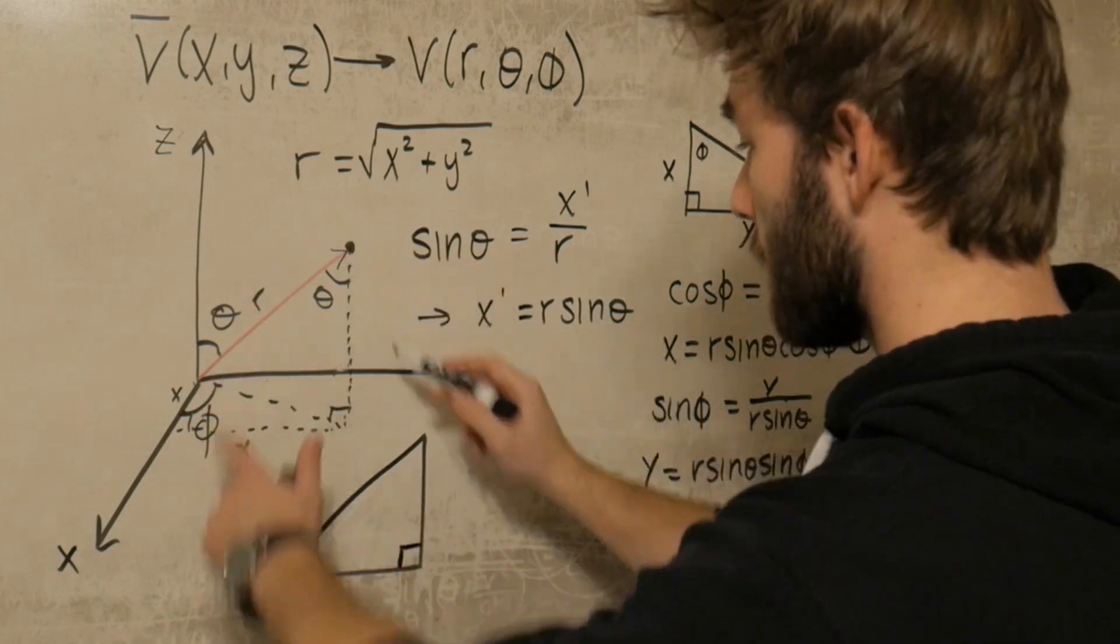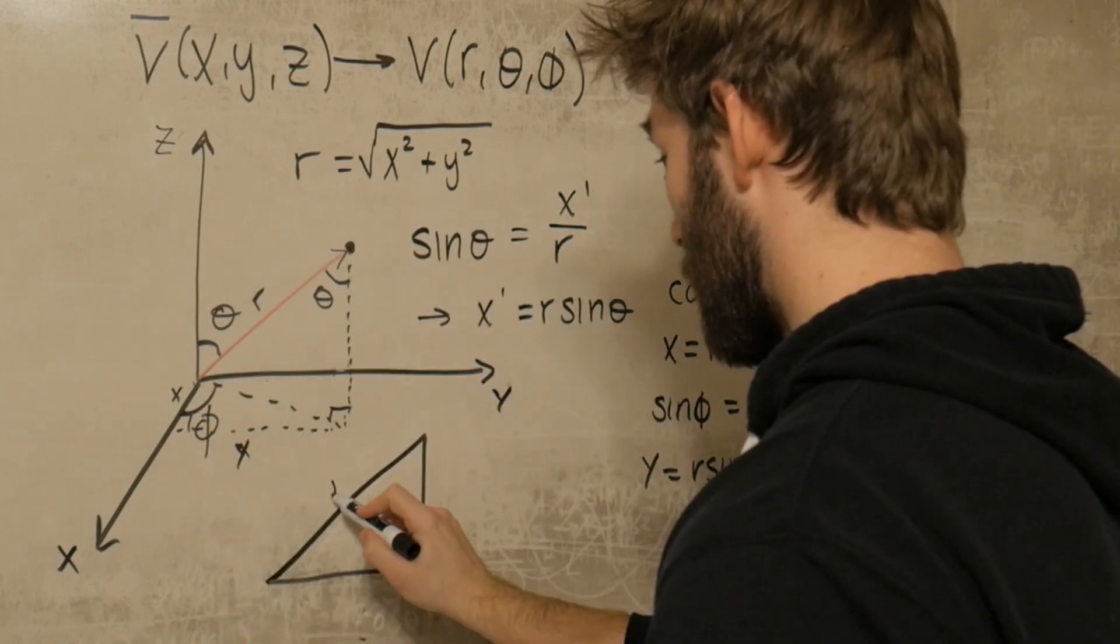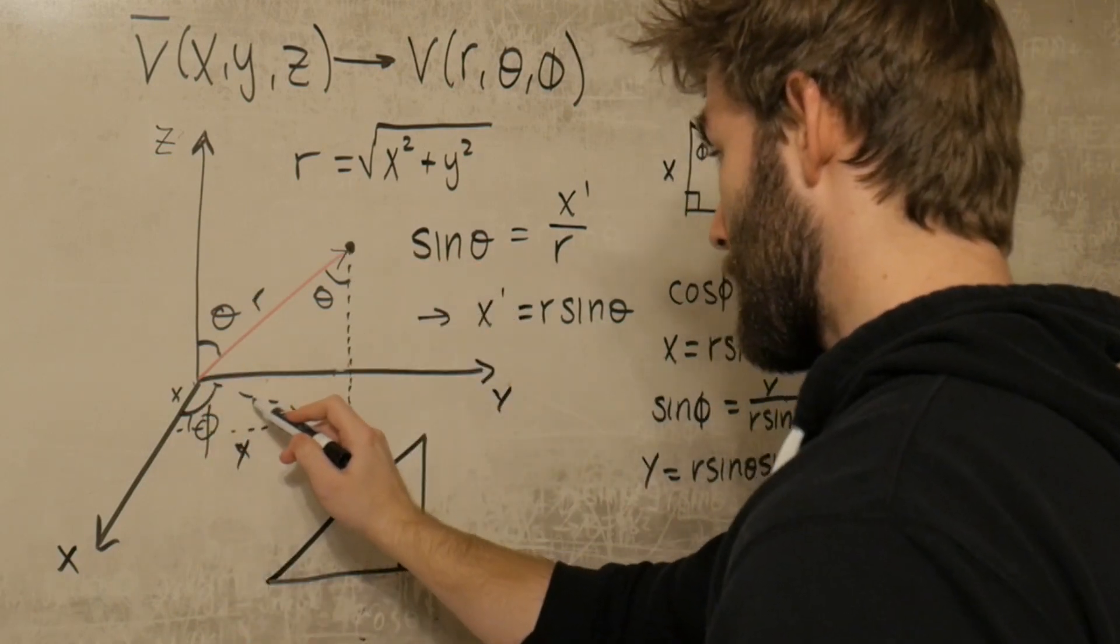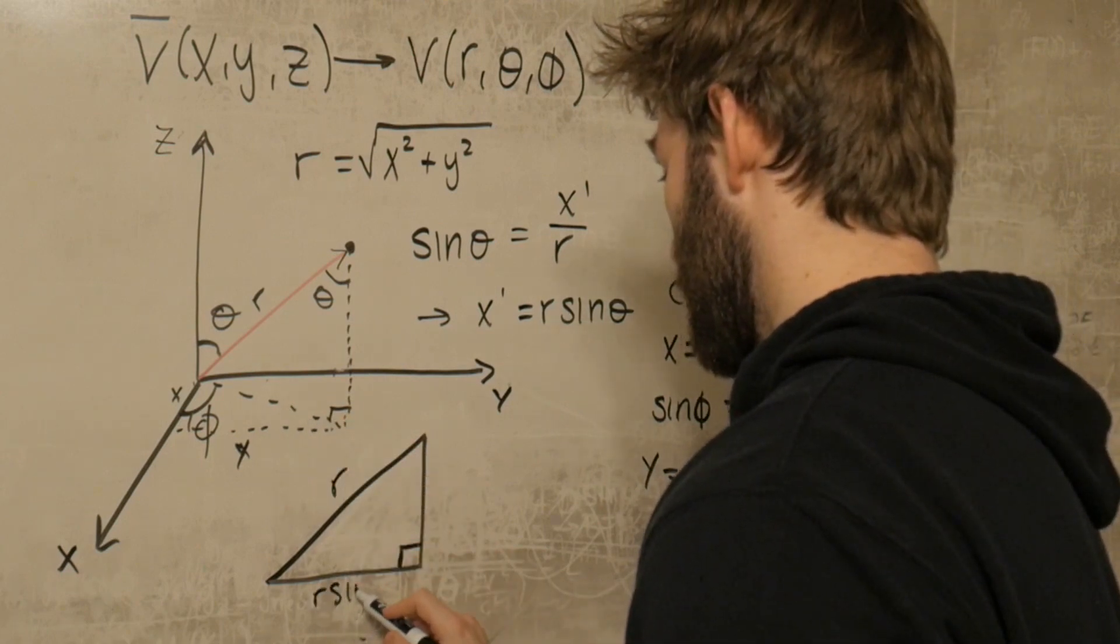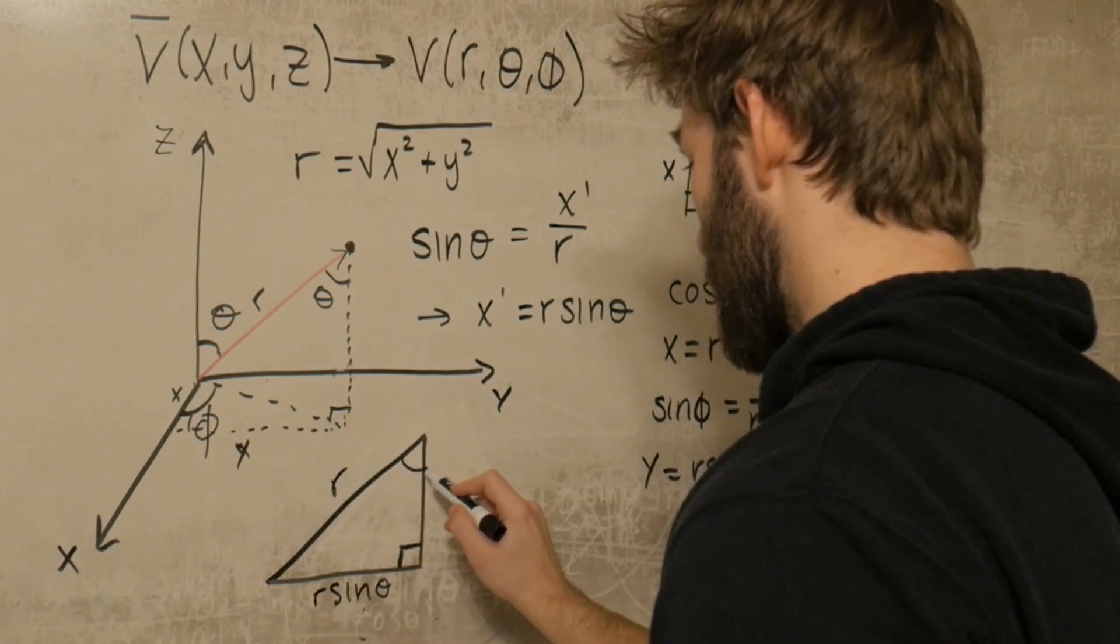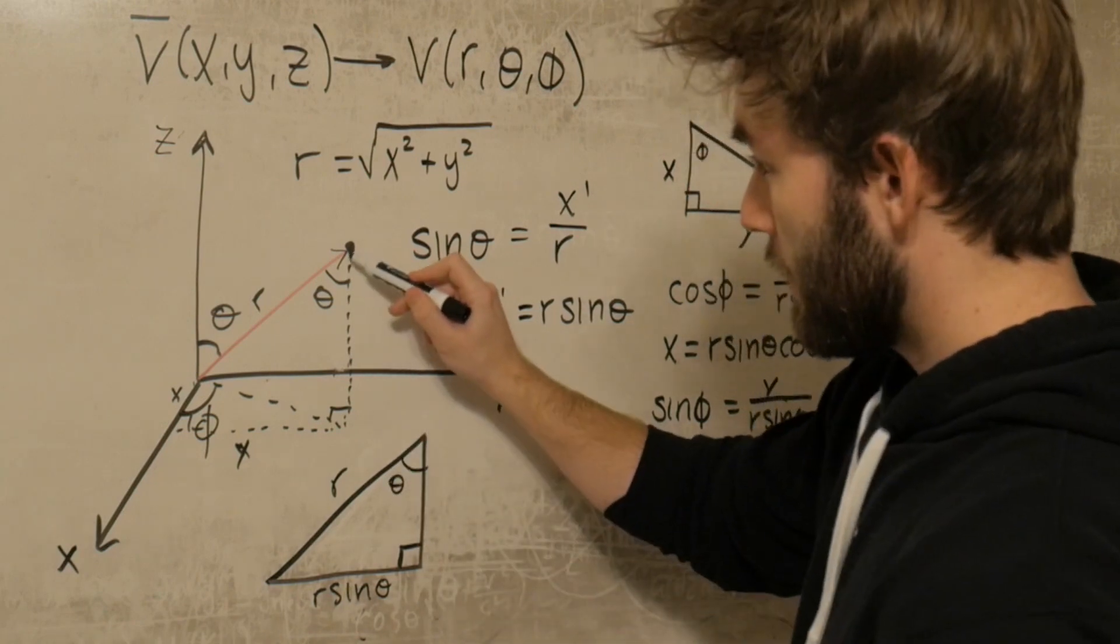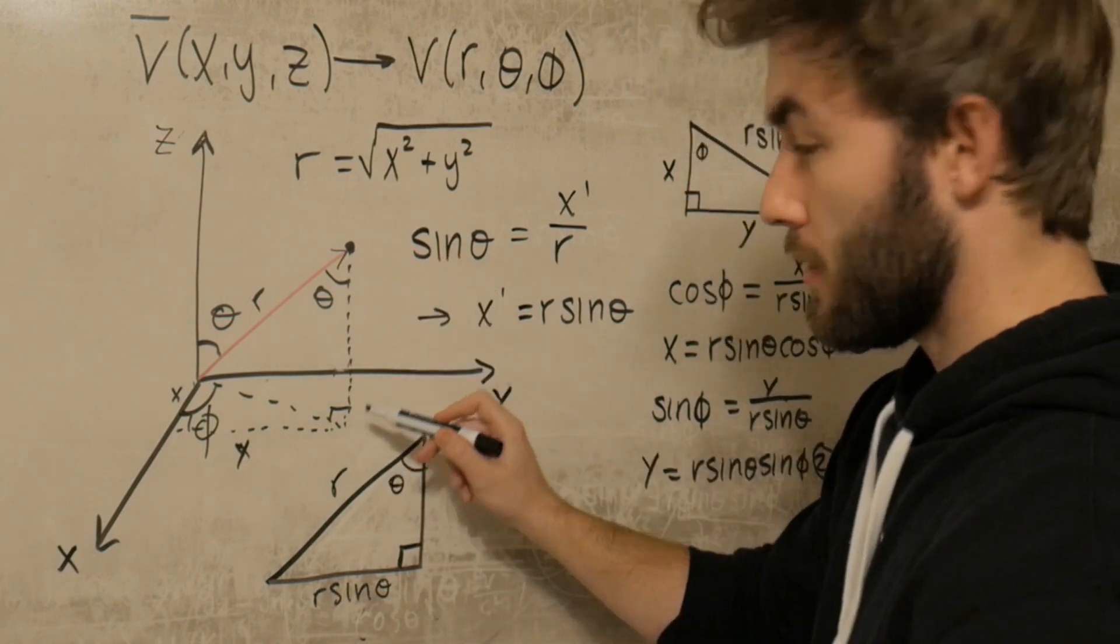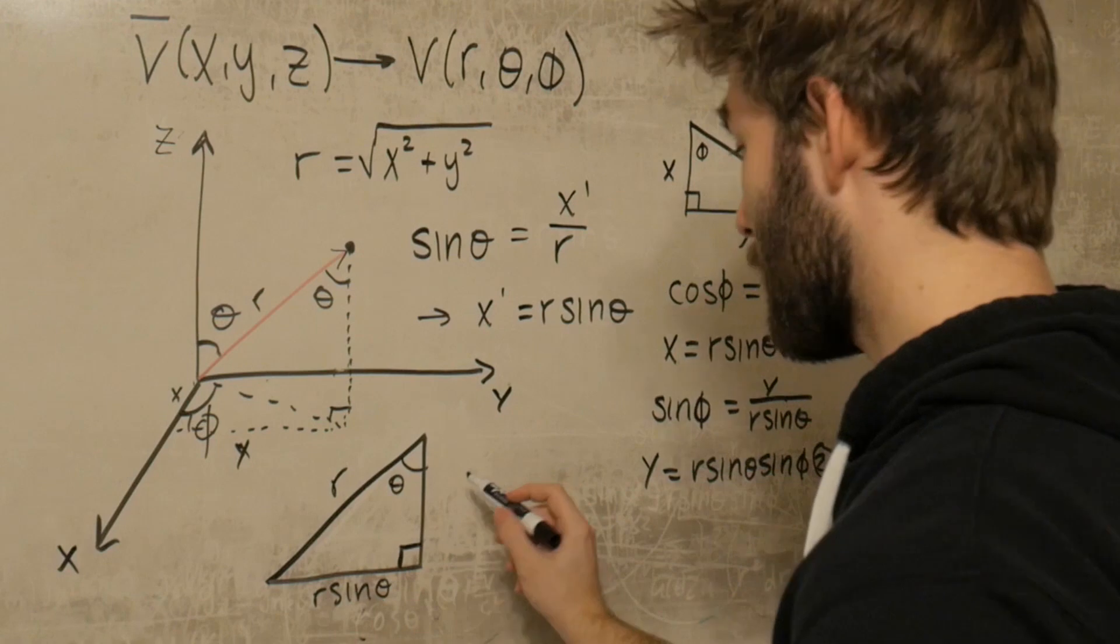We can start building the components again. We know that this side here is r, we know that this dotted line here corresponds to r sine theta. This is theta, this is theta, and this z direction here is purely in the z direction, so we're going to call that z.